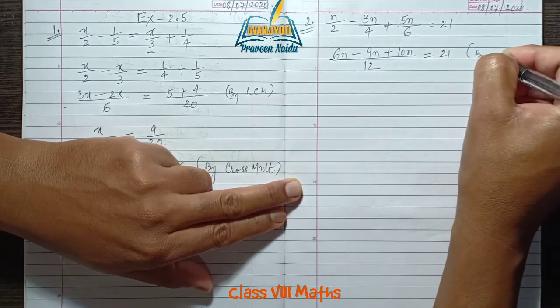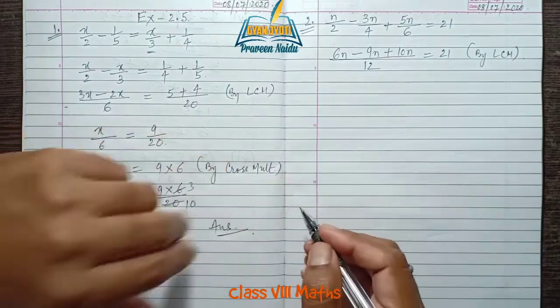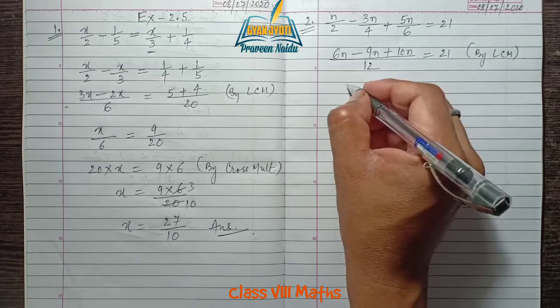Equals 21. By solving, 6n - 9n = -3n, plus 10n over 12 equals 21.